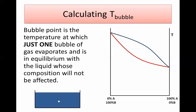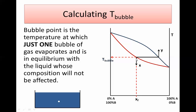It's called the bubble point because if you have a liquid in a beaker and gradually increase the temperature until you touch the liquidous curve, a very small bubble of gas starts to form. You stop at this temperature — this tiny bubble of gas is in equilibrium with the whole liquid. The liquid composition hasn't changed because it's just a tiny bubble, and this temperature is the bubble point. That's why the tie line is drawn the way it is.